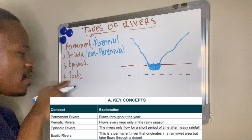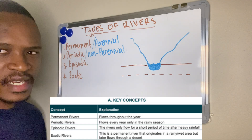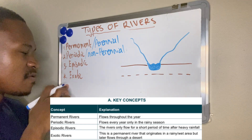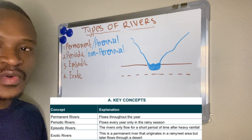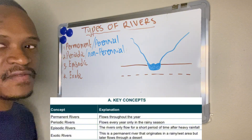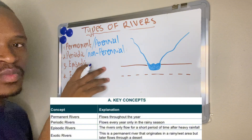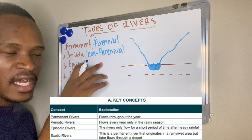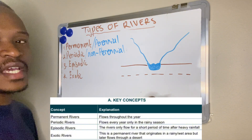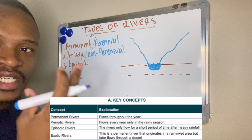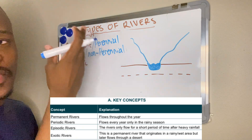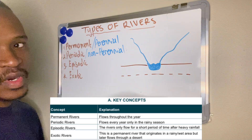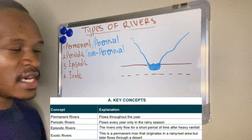Number four, we have the exotic river. The exotic river flows from an area which has a lot of rainfall — it flows from a humid or wet area to a dry area. So it originates from a wet area and then flows towards a dry area.